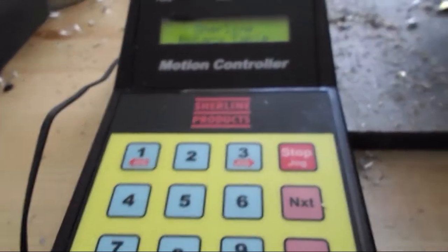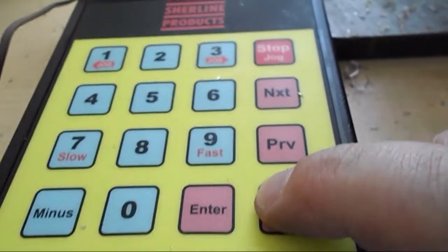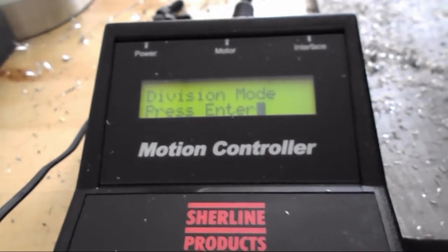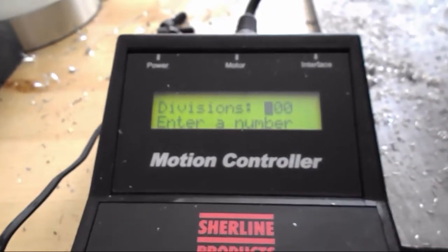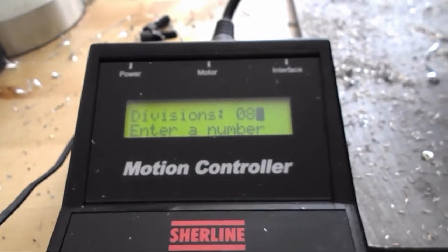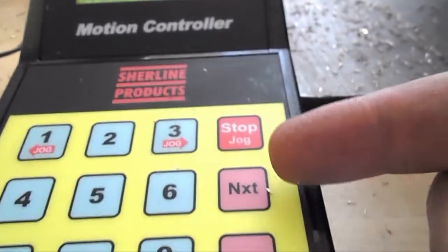So this is the Sure Line rotary table controller. Pretty simple to use. The first thing you got to do is select what mode, and I'm gonna do division mode. So I'll just press enter. It asked me how many divisions. I type in 80 because this is 80 teeth, press enter. And then all I have to do is press the next button and it'll rotate the table to the next location. So let's start cutting.